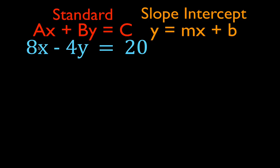This equation is currently in the standard form. This is the general form of the standard form: ax plus by equals c. In our equation, a is 8, b is minus 4, and the constant is 20. In the slope-intercept form, all of the terms except for the y are on the right-hand side of the equation: y equals mx plus b. In order to convert this equation from standard form to slope-intercept form, we need to move everything over to the right-hand side of the equals sign, except the y.